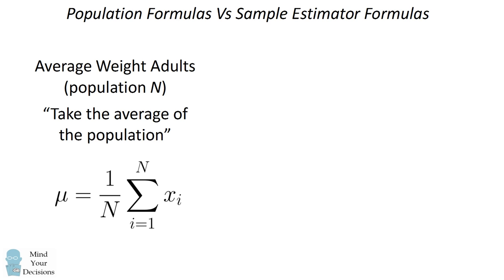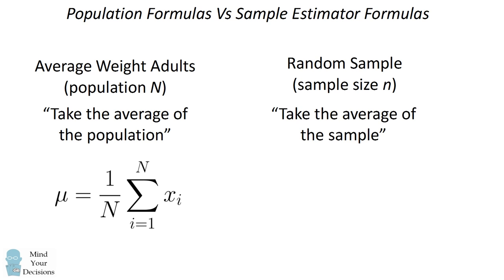Now, it's not often practical to take the average weight of millions of people. So what we do in practice is we take a random sample. And this will be for a sample of size n. In order to get an estimator of the average weight, we would actually just take the sample average.